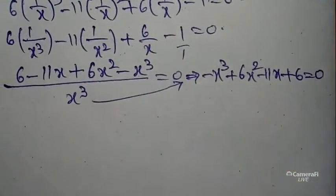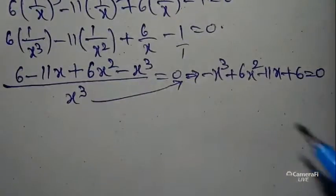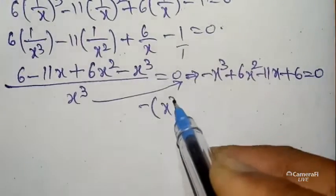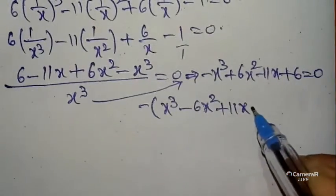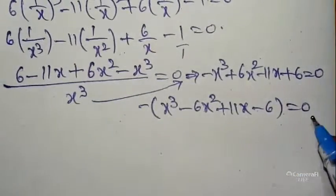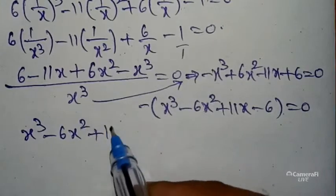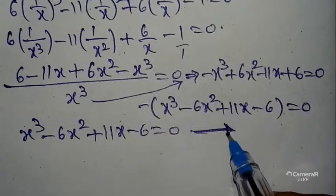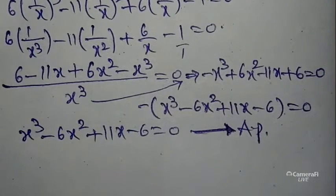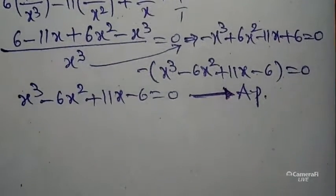After taking x³ as the LCM and simplifying, we get a negative symbol. Taking minus as common, the remaining value gives us: x³ minus 6x² plus 11x minus 6 equals zero. This equation is now in terms of Arithmetic Progression. So the Harmonic Progression equation has been converted into an Arithmetic Progression equation.